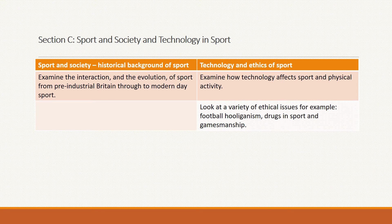Society and Technology: we look at things like the history of sports — how different sports came about and where they evolved from, from pre-industrial Britain through to modern day sports. We also look at technology, such as Hawkeye for example, and then various ethical issues such as football hooliganism, drugs in sport, and gamesmanship.